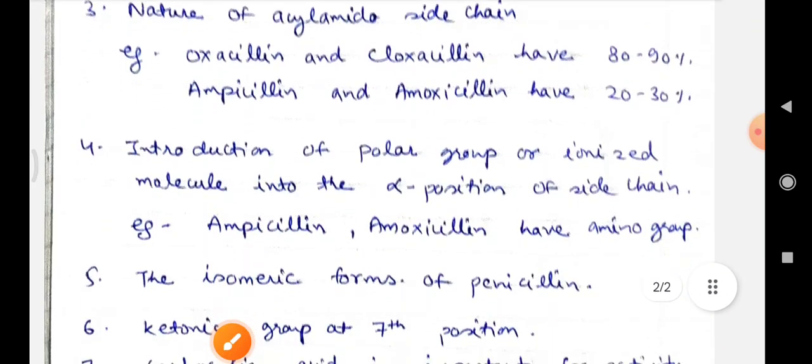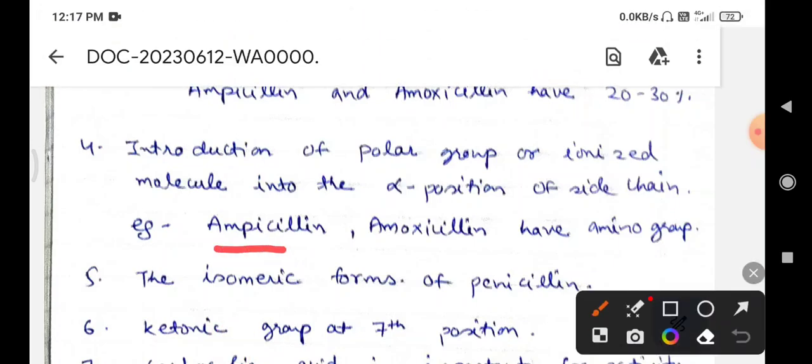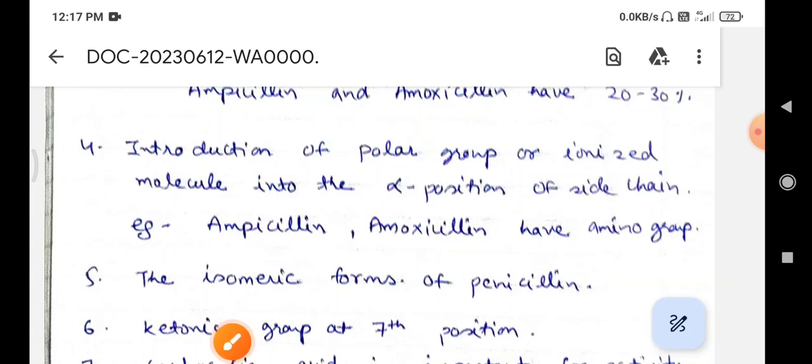The introduction of a polar group or ionized molecule into the alpha position of the side chain in the benzyl carbon atom of penicillin G confers activity against gram-negative bacilli. For example, ampicillin and amoxicillin have amino groups in the structure. We can also place hydroxyl, carboxyl, or sulfonyl groups at these positions.